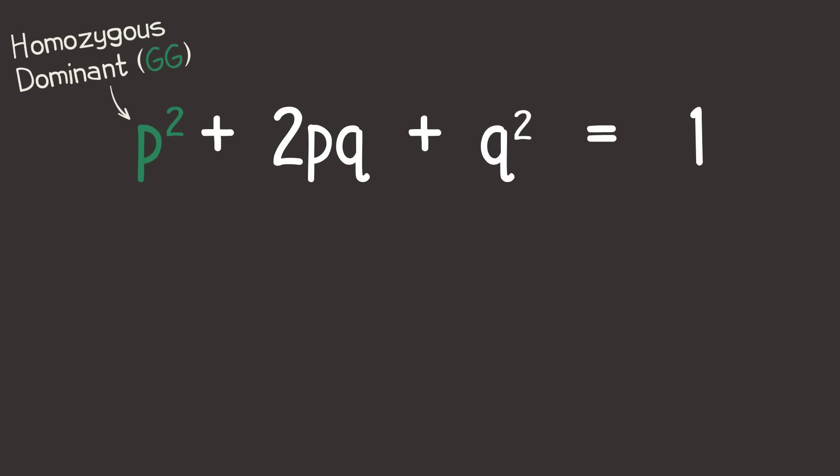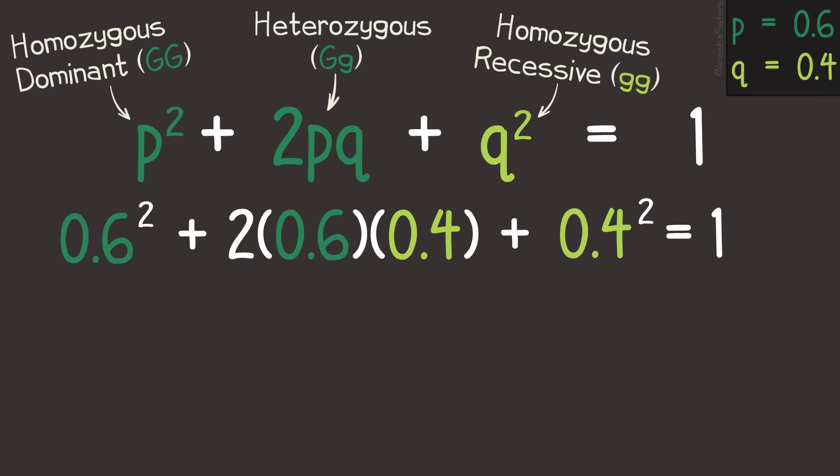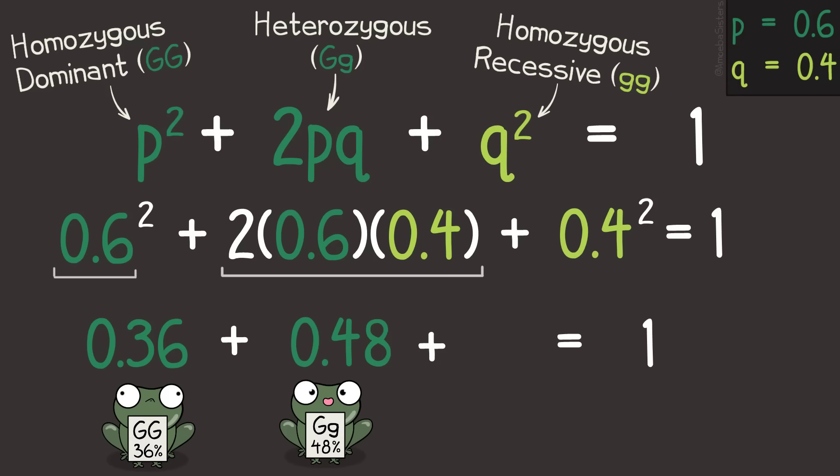So p² is the homozygous dominant frequency, the frequency of big G big G in this case. 2pq is the heterozygous frequency, so big G little g frequency in this case. q² is the homozygous recessive frequency, so little g little g frequency in this case. Let's plug those previous p and q values in. p² would then be 0.36. 2pq would be 0.48. q² equals 0.16. Cool, huh?